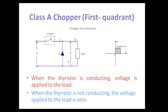The output voltage you will get is lesser than the input voltage. The class A chopper is defined as a first quadrant operation, meaning the voltage and current both polarities should be positive — voltage should be positive and the current direction should be positive.